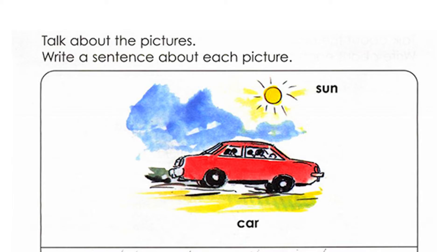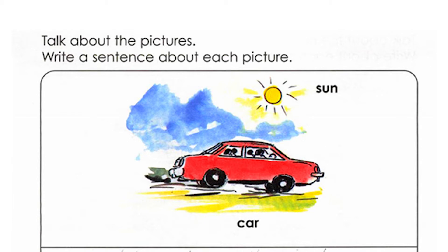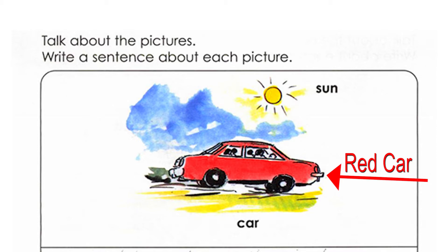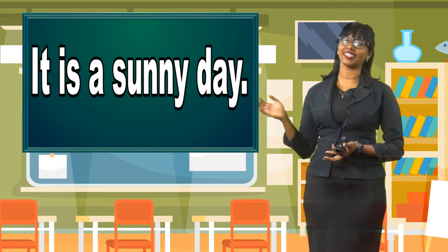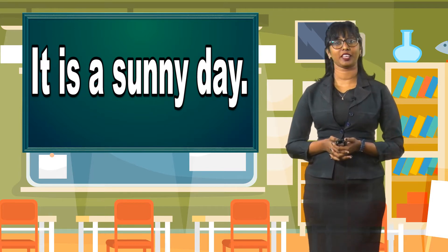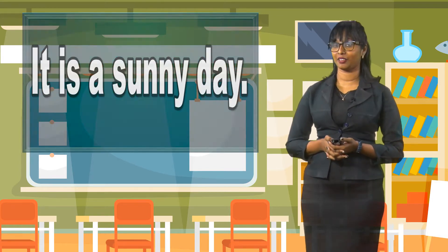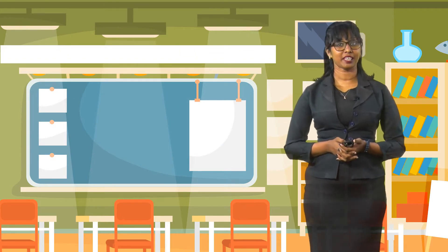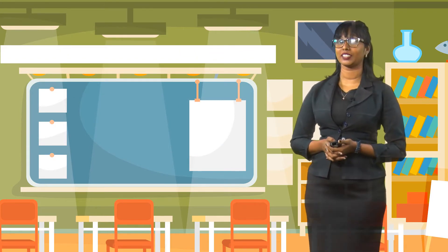Take a look again. Now in this first picture, we can see a red car. The color of that car is red. And we can also see Mr. Sun. The sun is out. So therefore, it is a sunny day. Whenever the sun is out, that type of day is a sunny day.